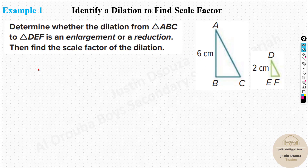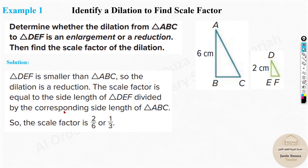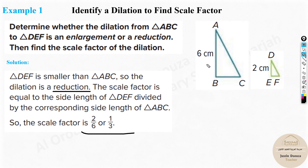Let's solve this problem: determine whether the dilation from triangle ABC to DEF is an enlargement or reduction, and find the scale factor. Looking at this, you can see it's a reduction — the original is big and the result is smaller. To find the scale factor, you must use corresponding sides. I can't use a side from one triangle paired with a non-corresponding side from the other.